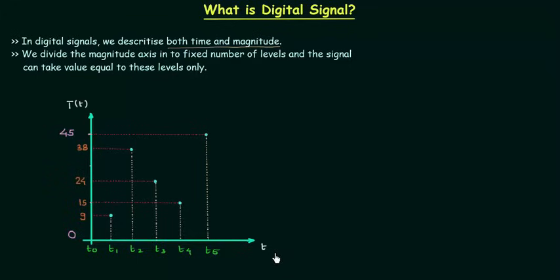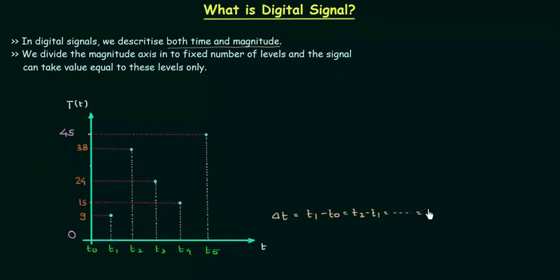By discretization I mean we have to divide the time axis into equal intervals. If delta t is the interval, then we can find this interval delta t by t1 minus t0, or t2 minus t1, and in the same way tn minus tn minus 1. This is how we find the interval. The next thing we have to do is discretize the magnitude axis also.